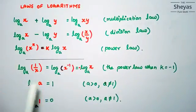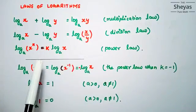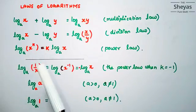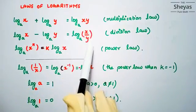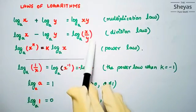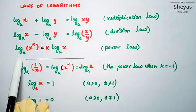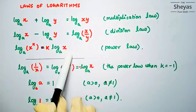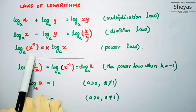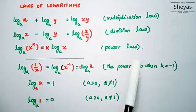The base here is a. In general, log x minus log y is equal to log x over y — when logs are in subtraction this becomes division, so we call this the division law. The power rule states that log x to the power k is equal to k log x — the power k comes to the front. This is called the power law.